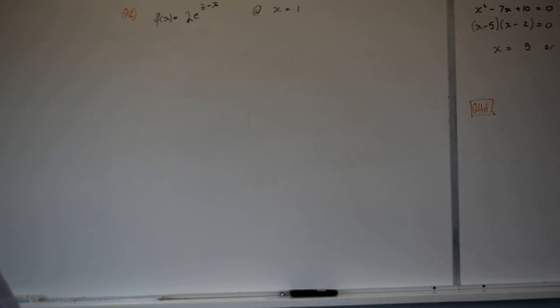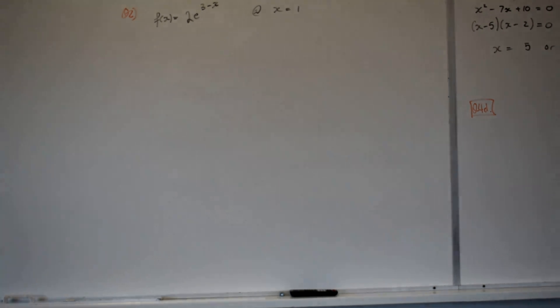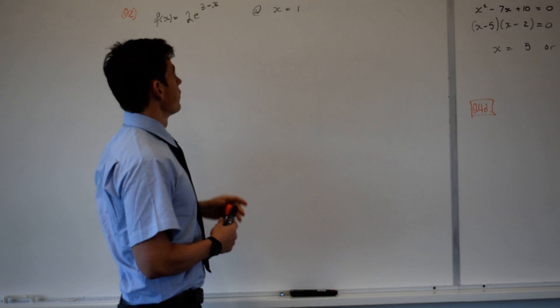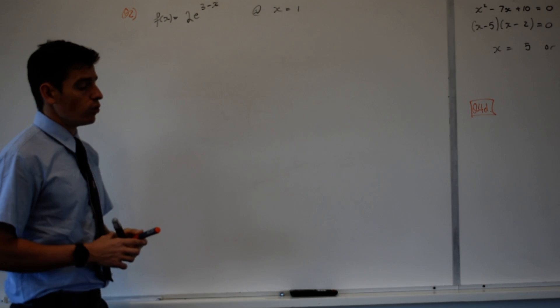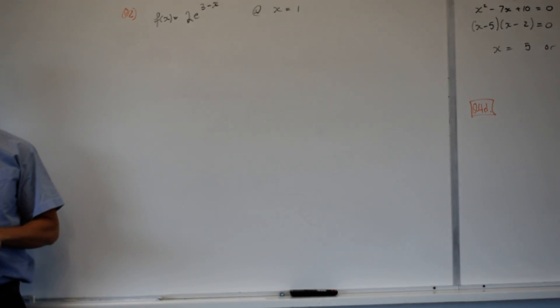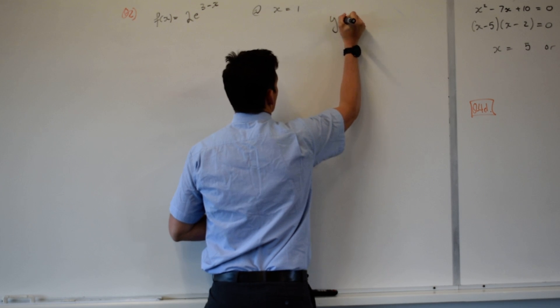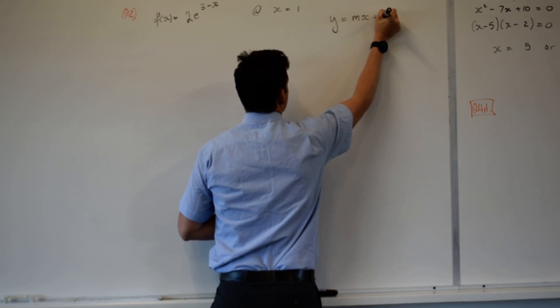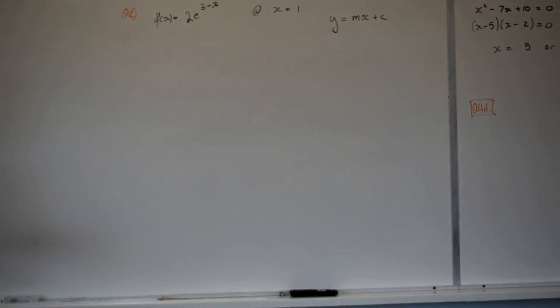All right, so we're going to talk about equations to tangents. A few of us are struggling with this, so I'd suggest that everyone watches and listens. You're given a function 2e to the 3 minus x, and you've got to find the equation of the tangent at x equals 1. What are all tangents? Lines. So the equation of a tangent will come in form y equals mx plus c. What should be replaced by numbers in that equation? m and c.